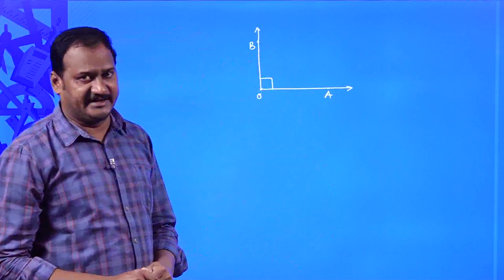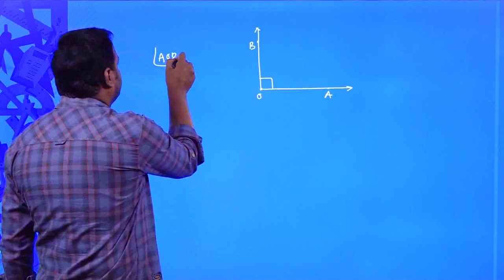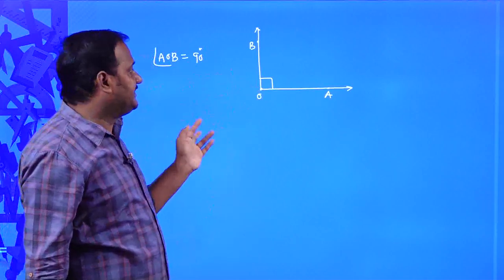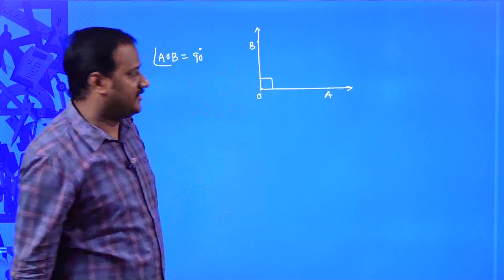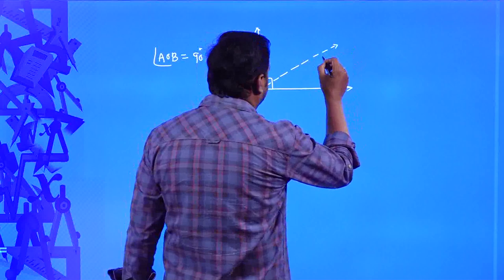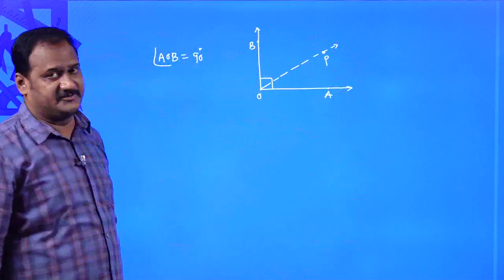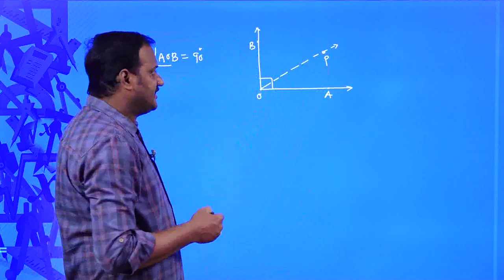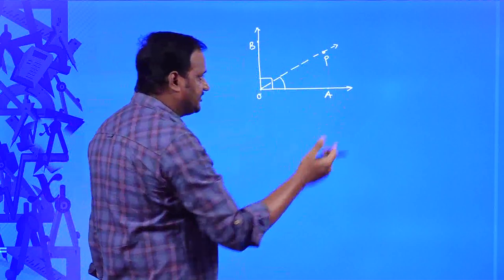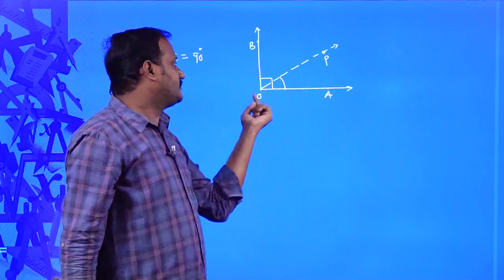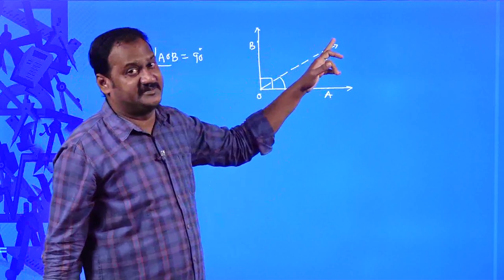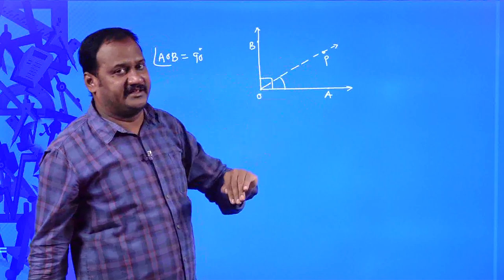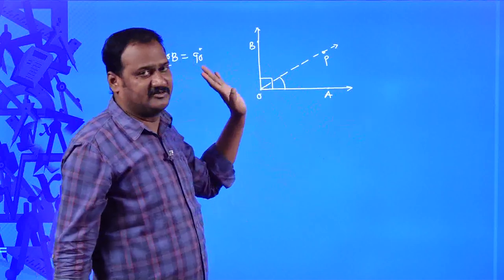Angle AOB is equal to 90 degrees, but there is one more ray OP in between OA and OB which is dividing that angle AOB into two different parts — angle AOP as well as angle POB. Suppose this angle AOP is equal to 10 degrees; what would be angle BOP? You can easily calculate because the total angle is 90 degrees. One part is 10 degrees, so the other would be 90 minus 10, which is 80 degrees.